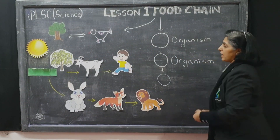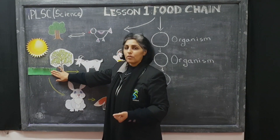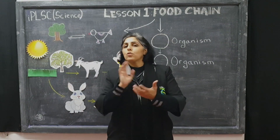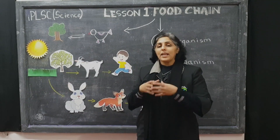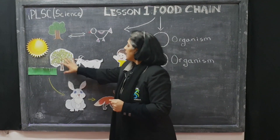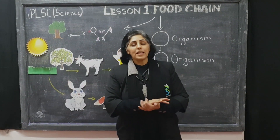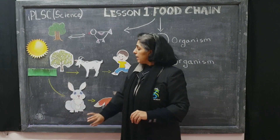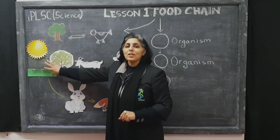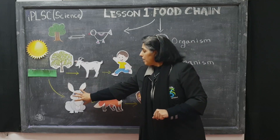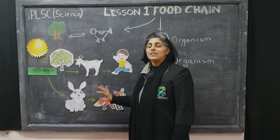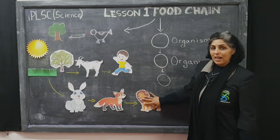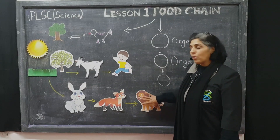Let's look at another food chain. Again, the producer is the grass and the tree. The sun shines upon the grass and tree, and the grass and tree trap the sunshine, turn it into energy and make food from this. This is eaten by the rabbit. Since the rabbit eats plants, grass or vegetables only, they are called a herbivore. They are also called consumers because they are consuming the producer. This rabbit further is eaten by the fox. The fox is called a carnivore because it eats meat.